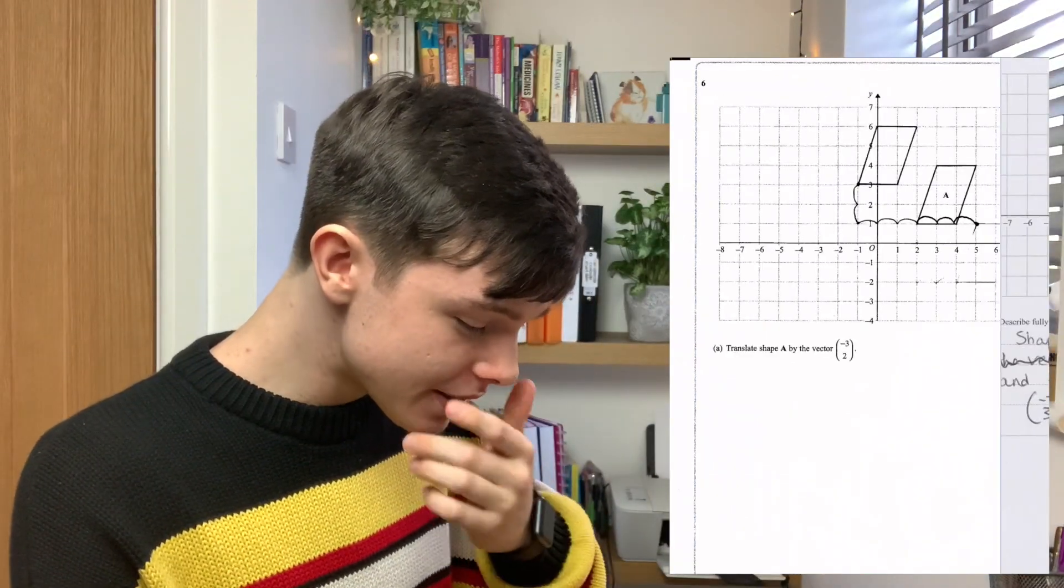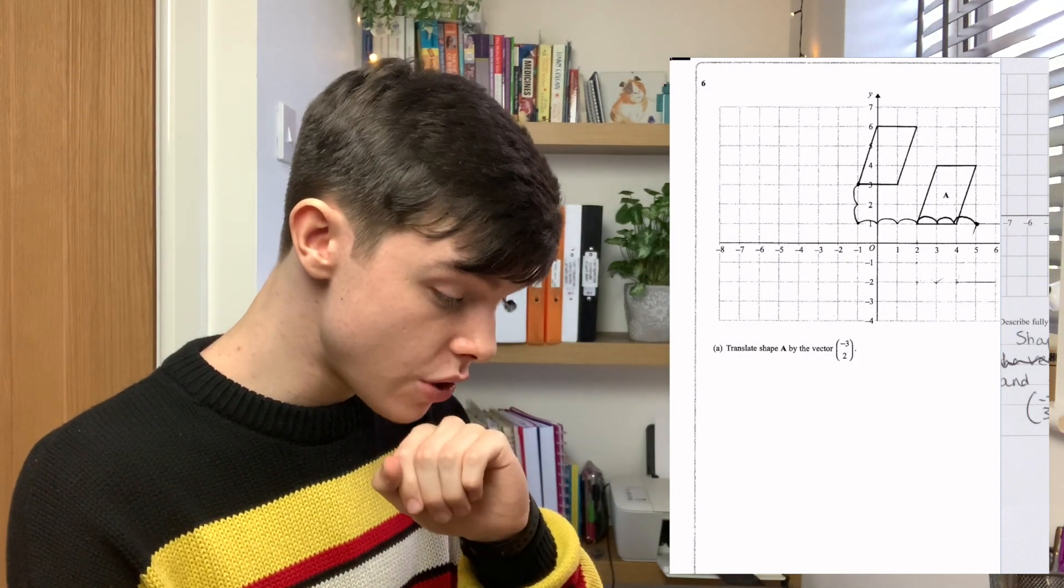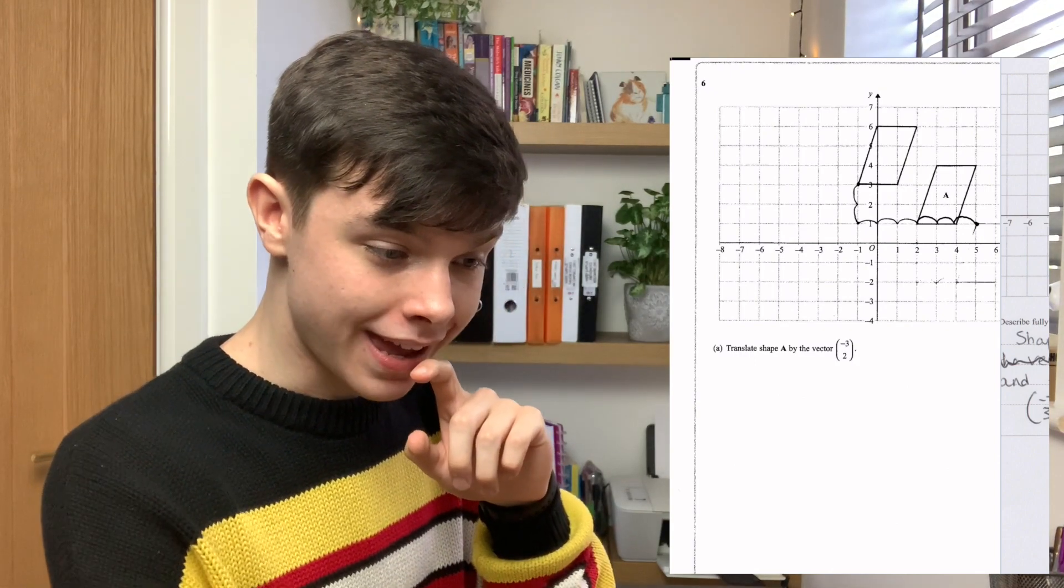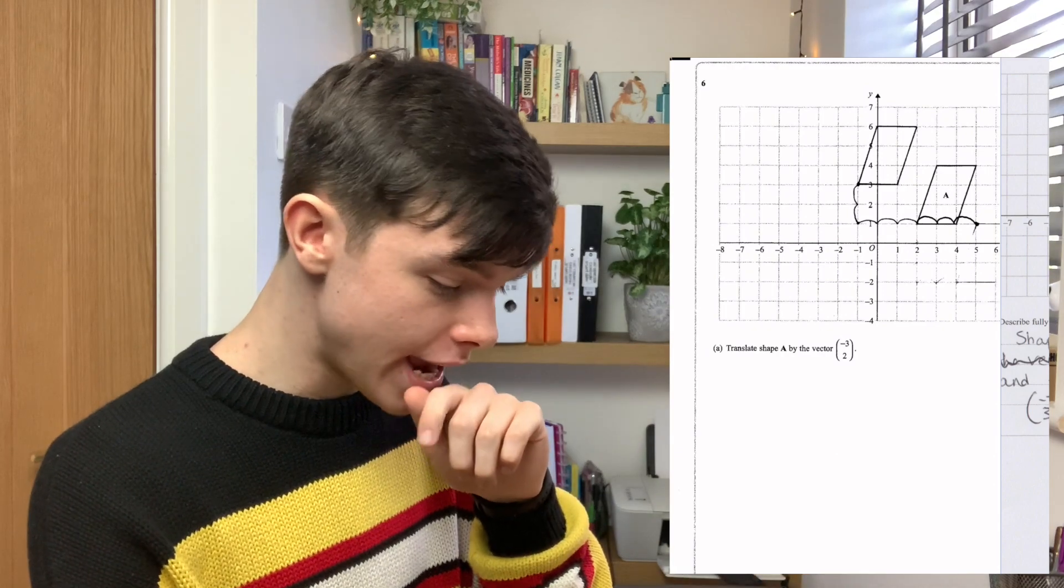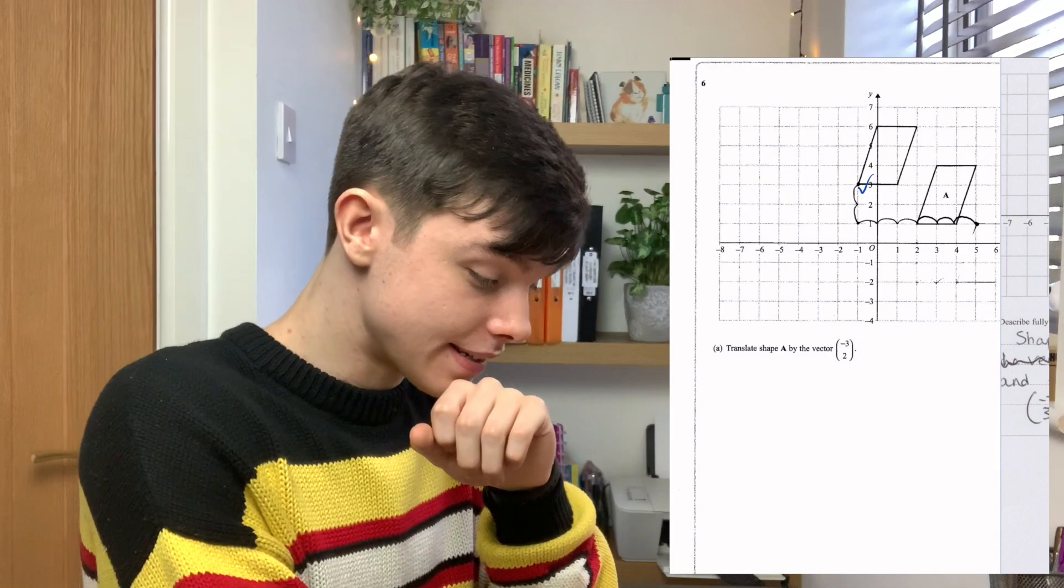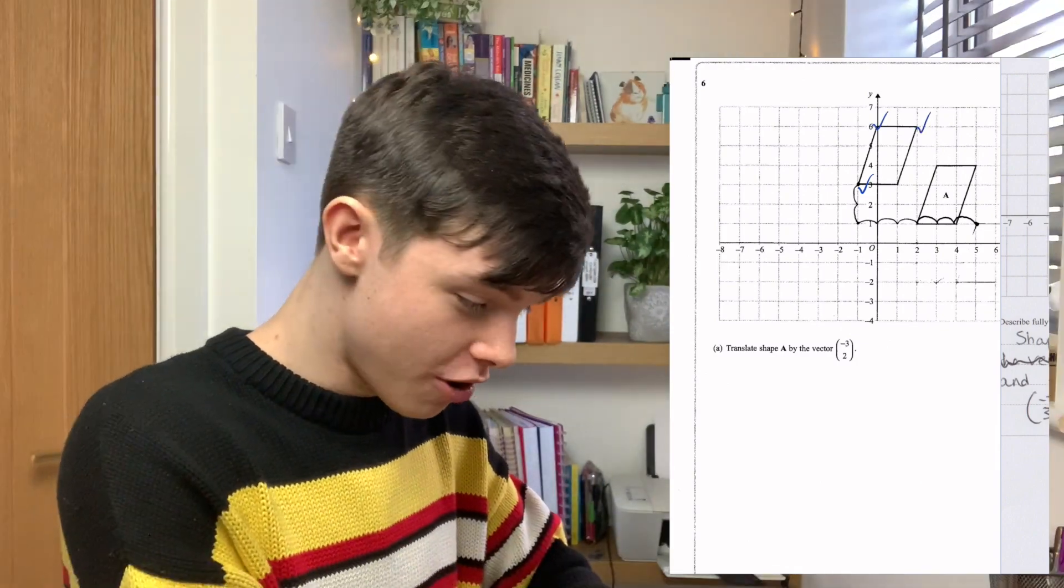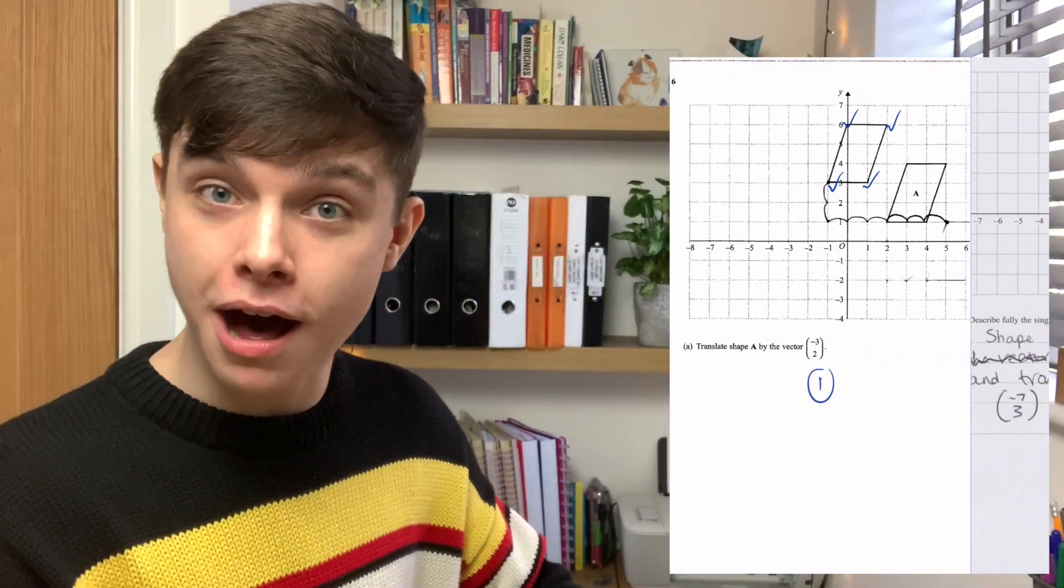Question six. We wanted to translate shape A by the vector minus 3, 2. And where should it be? It should have the vertices minus 1, 3. Yes. Nought 6. Yes. 2, 6. Yes. And 1, 3. Yes. So, we can give you one mark.